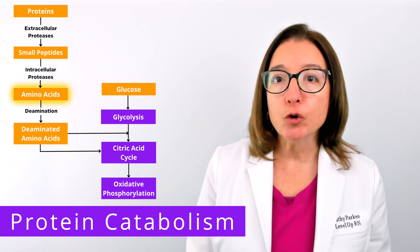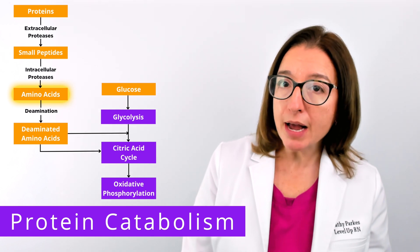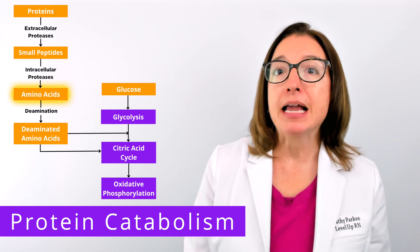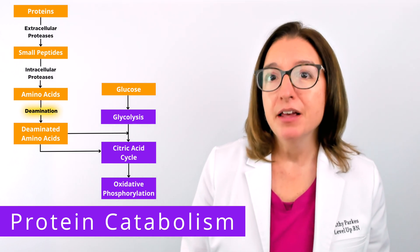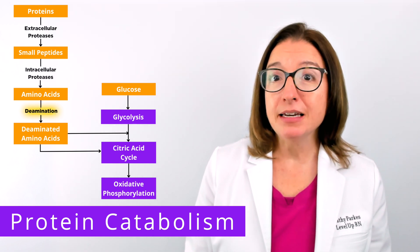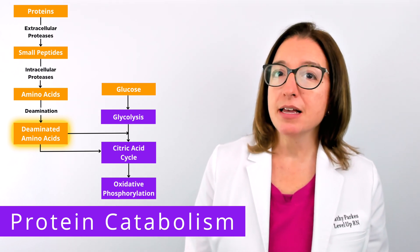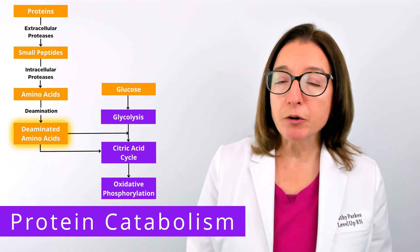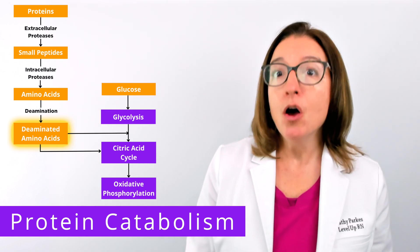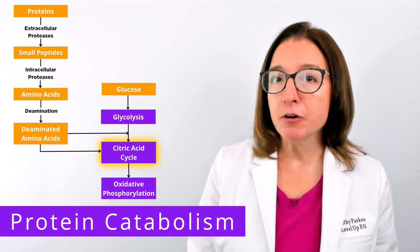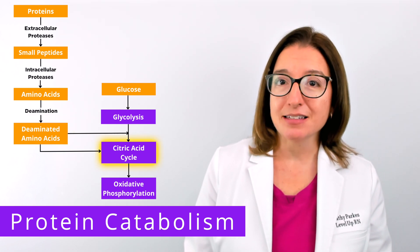The amino group is removed from the amino acid by enzymes in a process called deamination. The remaining deaminated amino acid gets processed into pyruvate or acetyl-CoA, or is shuttled into one of the intermediate steps of the citric acid cycle.